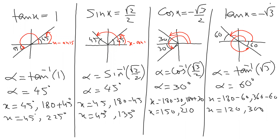Student: I have a doubt. In the last two, when you drew the quadrants, why did you invert them in the opposite direction? Teacher: It has a negative sign. Look — cosine is positive in the first and fourth quadrant, but here he is negative. So cosine is negative in the second and third. I think you got my point.